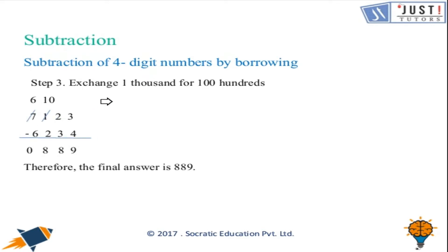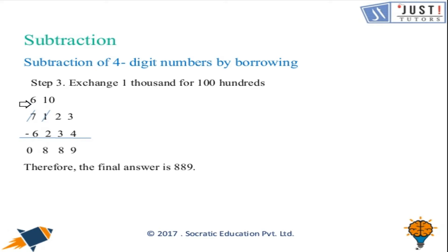Moving ahead, we can't take away two from zero in the hundreds column, so we borrow from the thousands column. We exchange one thousand for ten hundreds, so the hundreds column becomes ten. Ten take away two gives us eight. The thousands column goes from seven thousand to six thousand, and six take away six gives us zero. The final answer is 889.